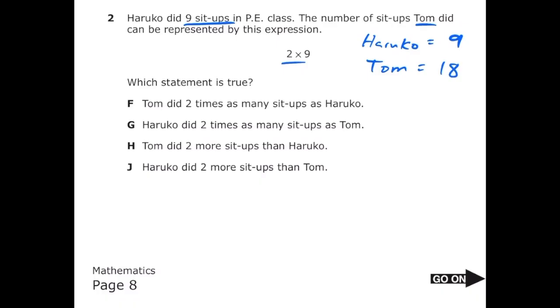They tell us that Haruko did 9 sit-ups and that Tom did 2 times 9, which is 18. Let's look through the answer choices. Letter F says Tom did 2 times as many sit-ups as Haruko. So 18 is twice of 9, so this one's probably going to be the correct answer.